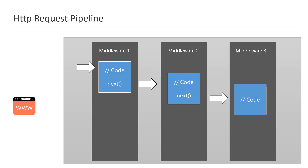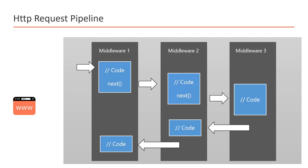If middleware 3 does not have a next() method, the request returns from middleware 3 and comes back to middleware 2. Any response-side code in middleware 2 gets executed, then it returns to middleware 1, where any remaining code executes, and finally we get the response. This is how the HTTP request pipeline works in ASP.NET Core — middleware is simply a bundle of a few lines of code.